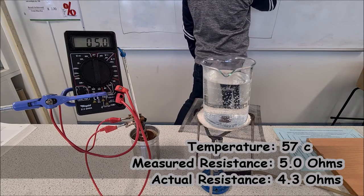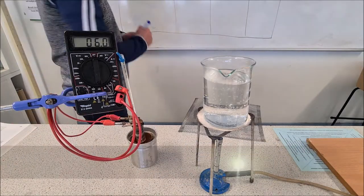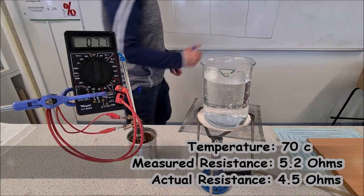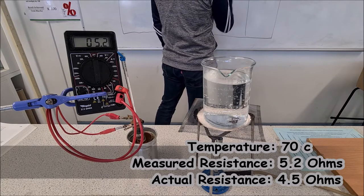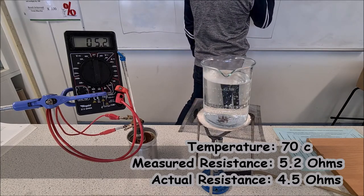We've gone up by another 0.2 so we're at 4.3 ohms. At 70 degrees, the resistance is 5.2. It's gone up by another 0.2 so we're at 4.5 ohms.